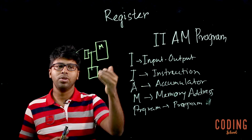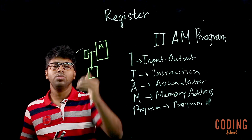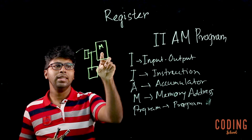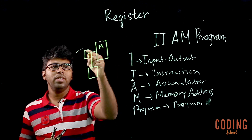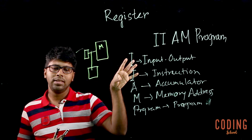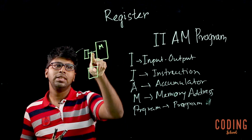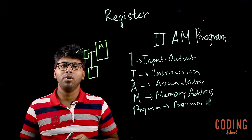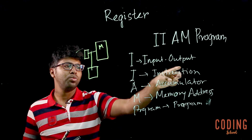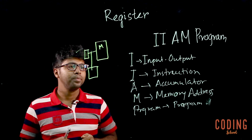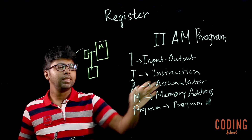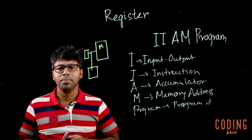We have to get into this memory and get into this instruction. We have to carry out our instructions, and then we have to use the output device or speaker. The way the register will be available is the way we have to use the input-output register. So we have to use the instruction register.